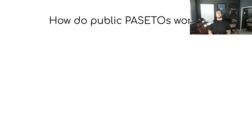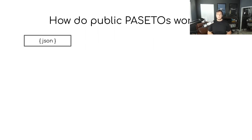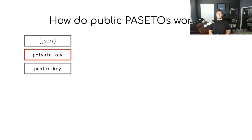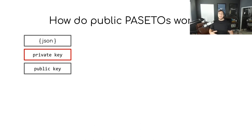Now let's talk about public PASETOs — how do they work? A public PASETO again starts with some JSON data. In this scenario, instead of having just a single secret key to create and decrypt the PASETO, you're going to have two keys. The first key is called a private key, which is a long randomly generated string that you will never share with anyone else — only you, the creator of the PASETO, will ever have access to this private key.